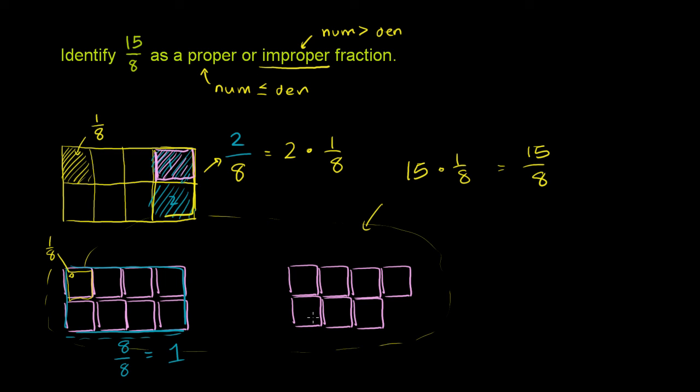And what do we have over here? We have 1 whole pie, 8 out of 8 pieces of a potential pie, or 8 out of 8 one eighths of a pie. And then over here we have 7 eighths of a pie. You could imagine a whole pie would involve another grid right there. It would involve one more over here.